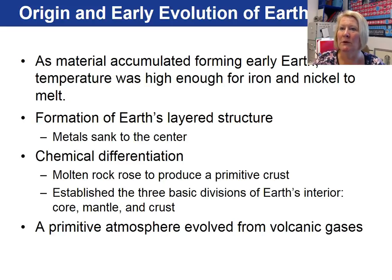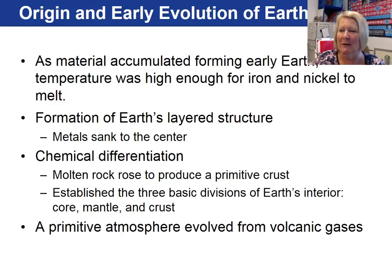This chemical differentiation is what we call the layering of our Earth into three different layers. We have our core, mantle, and crust, and most of us are familiar with those terms from elementary school. In addition to the Earth differentiating into those three compositional layers, a primitive atmosphere also evolved because of an extreme amount of volcanic activity that was releasing gases from the Earth's interior.